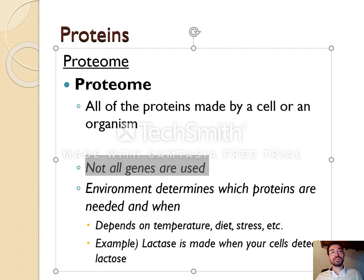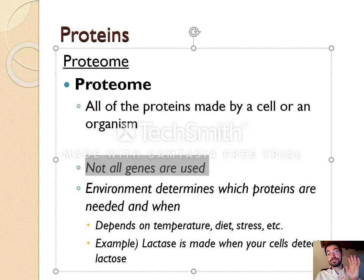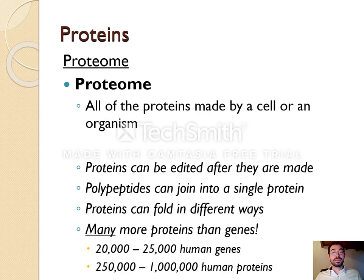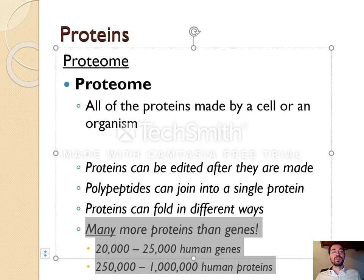We'll study gene usage more when we study genetics, but we've touched on it when we talked about differentiation — the idea that my skin cells are reading some parts of the DNA that muscle cells are not, and vice versa. So depending on the environment and the part of your body, different genes are expressed, proteins can be edited after they are made, and different proteins can be joined together in quaternary structure. That means there are many, many more proteins than genes: while there are around 20,000 genes, there are around up to a million proteins. The proteome is way bigger than the genome.